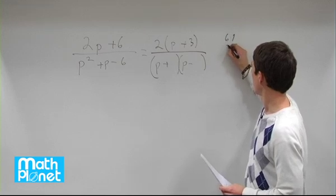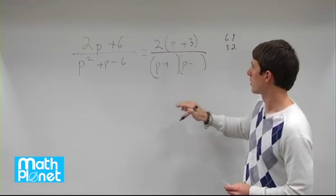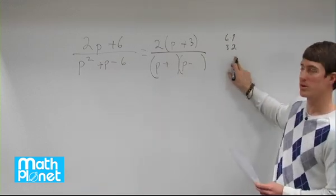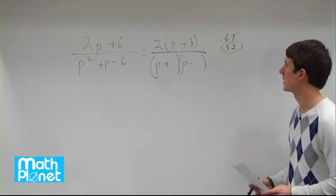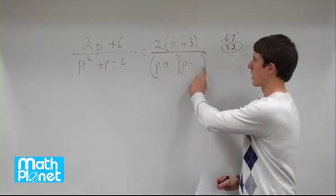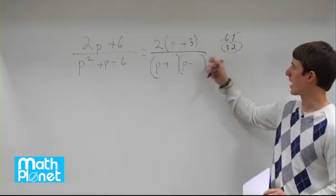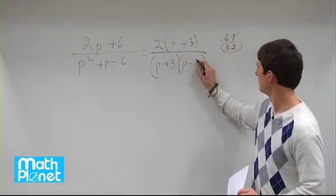6 factors as 1 times 6 or 3 times 2. Since the coefficient difference is 1, we need numbers that differ by 1, so 3 and 2. Now which one is positive and which is negative? Since the cross term is positive, the bigger number must be positive. So it's (p plus 3)(p minus 2).